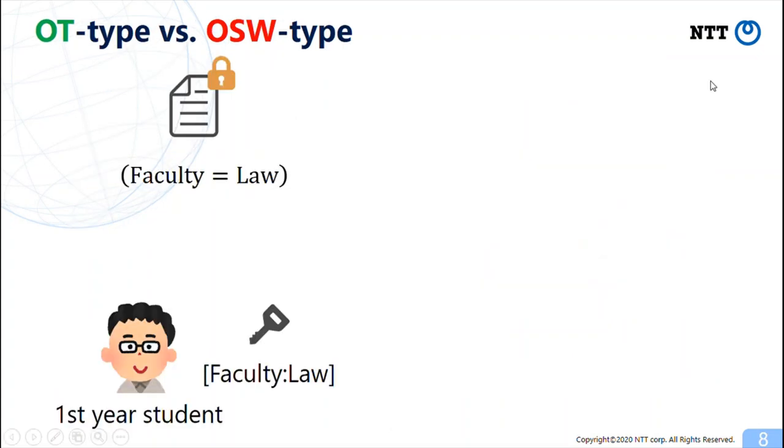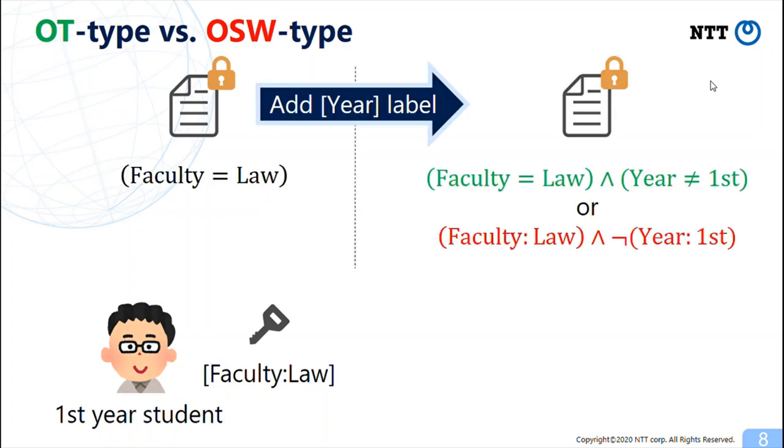Let us consider the following example. Suppose there is an ABE system in which only the label faculty exists and he is a first year student in the faculty of law. At some point, label year is added to the system and ciphertexts with policies including the new label will be generated.